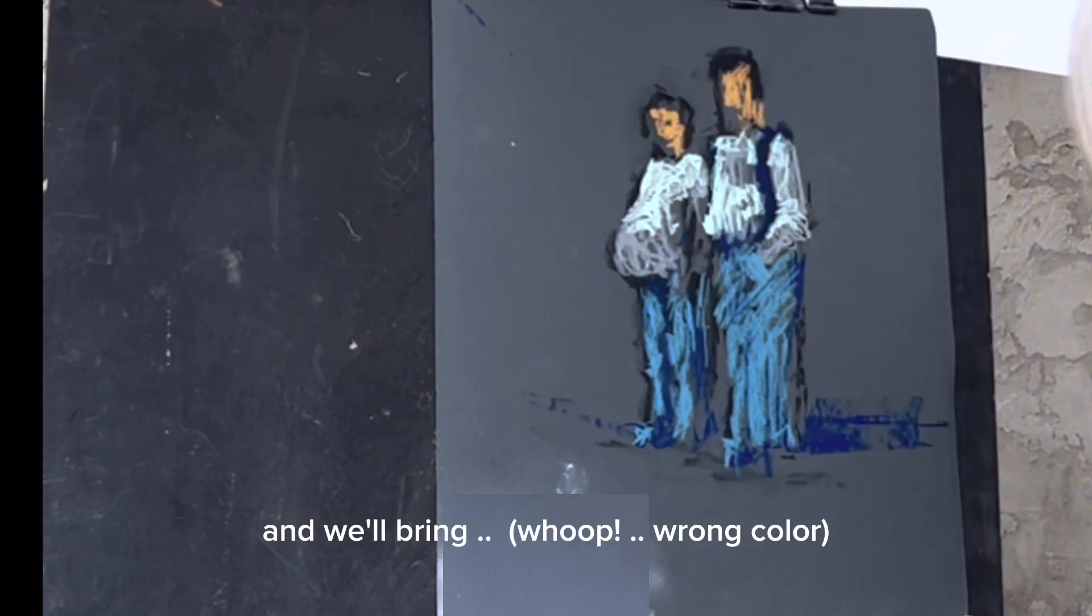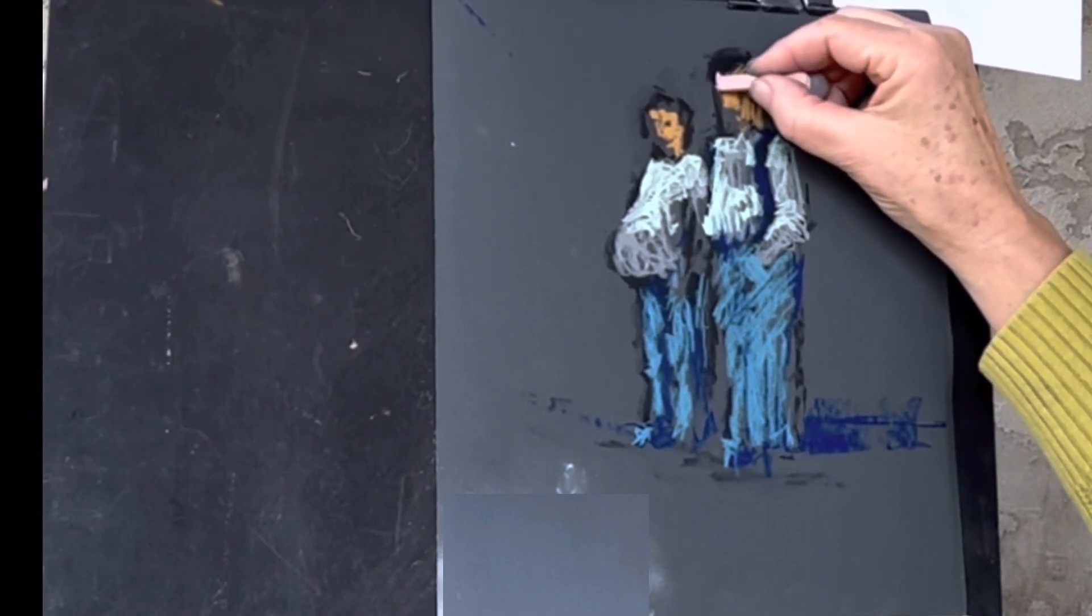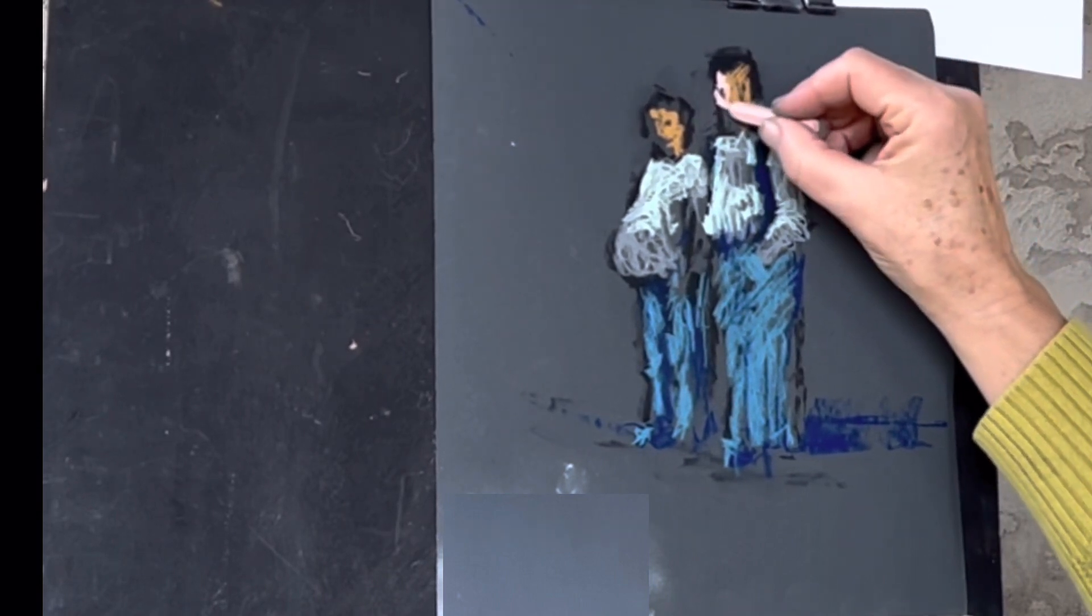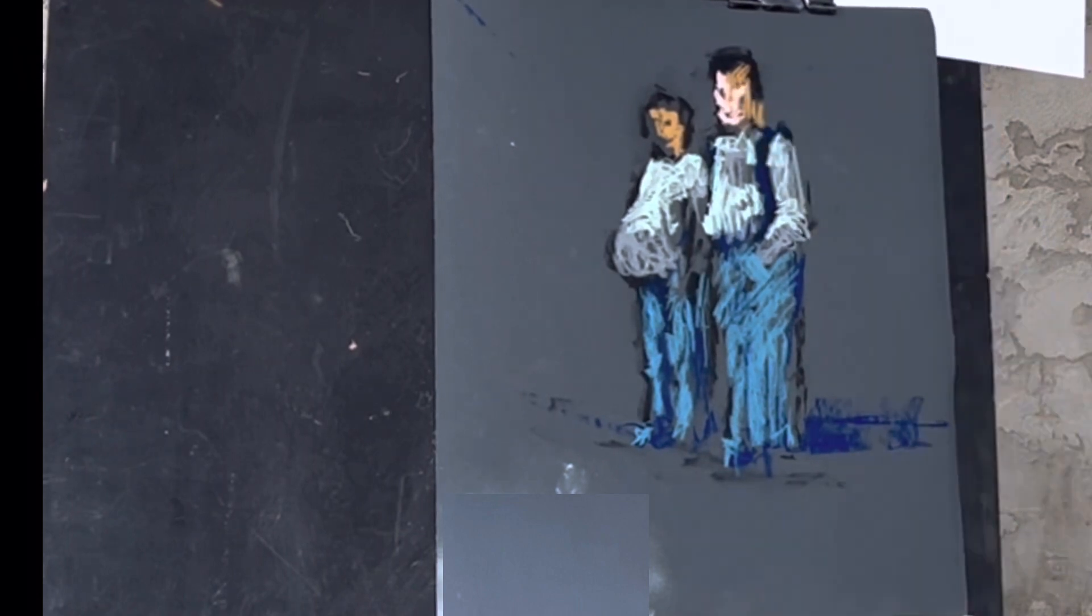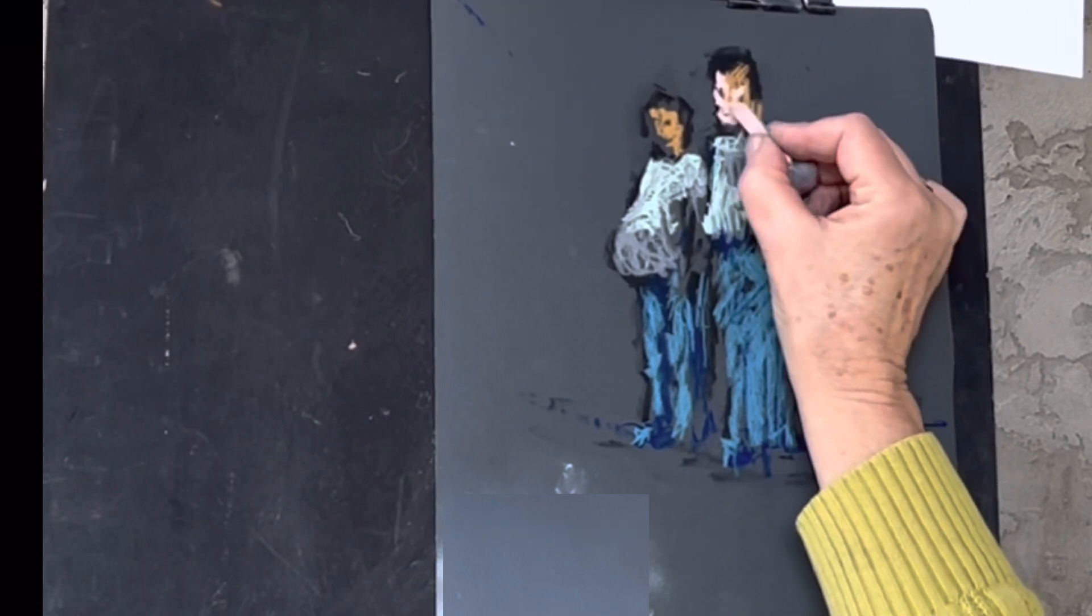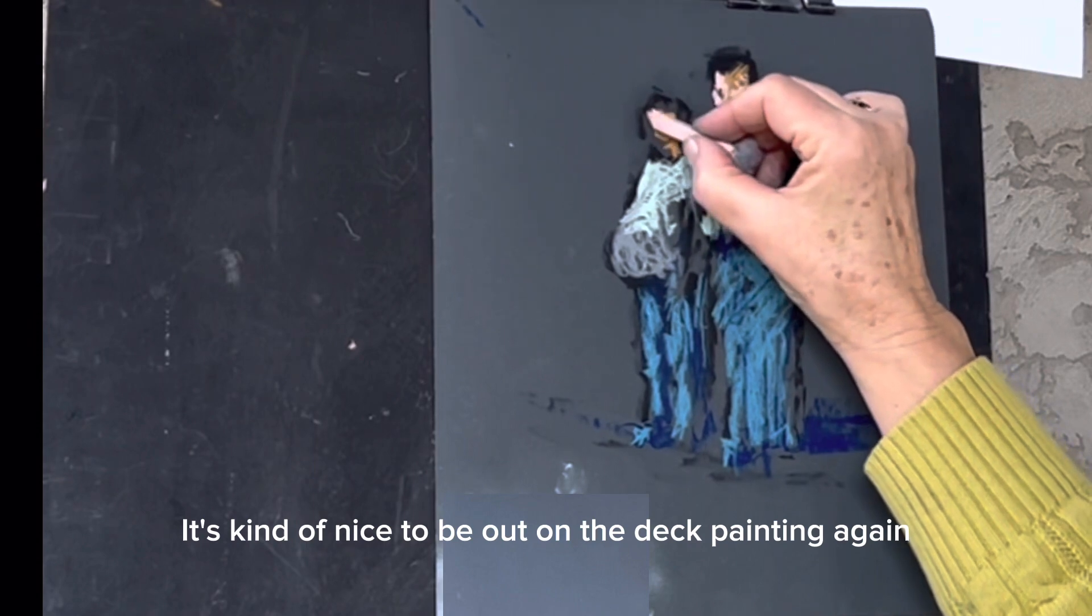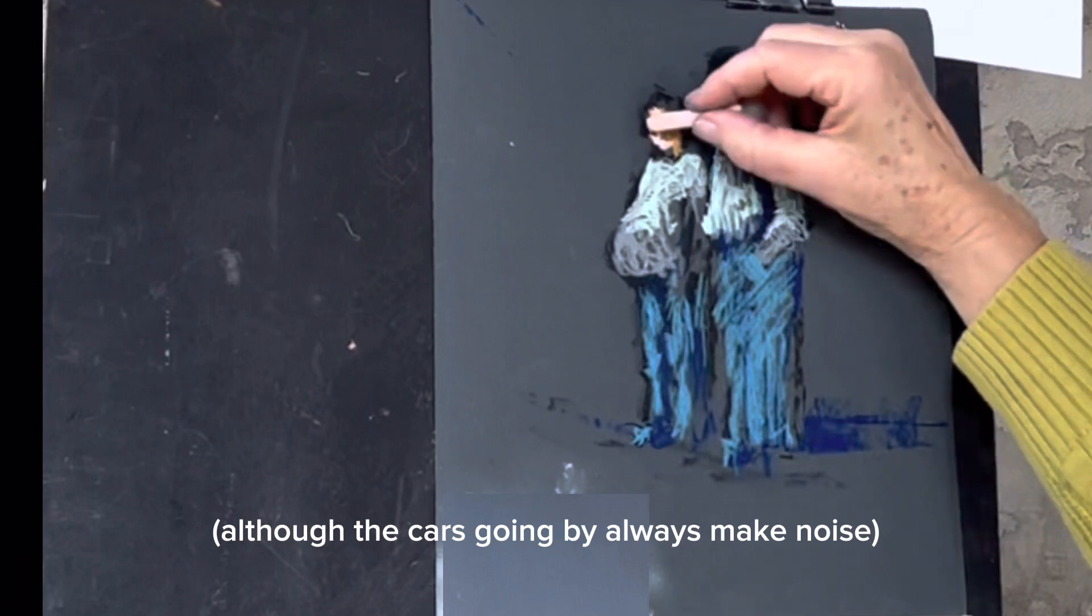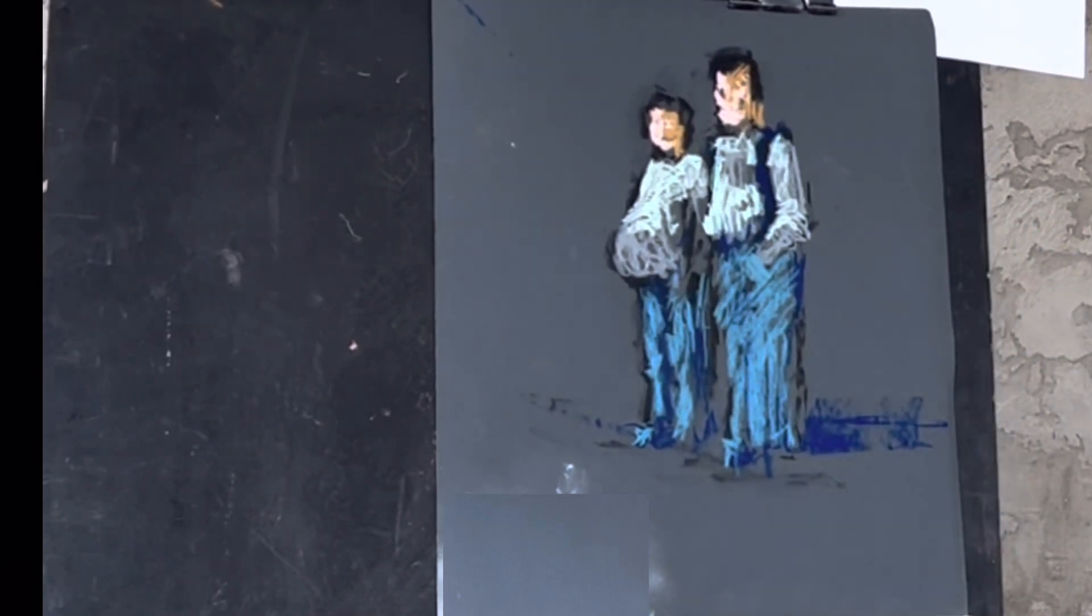We'll bring, oops, wrong color. Follow the general form of the face. Looks a little skeletal because of that line right there. You want to adjust that at the mouth. It's kind of nice to be out on the deck painting again. Although the cars going by always make noise. Let's see.